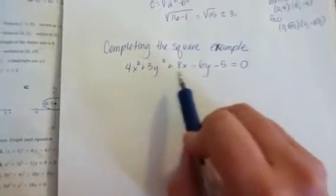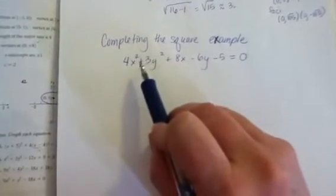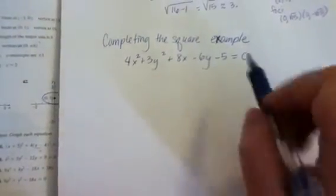Just like circles, we can complete the square with ellipses. Remember, when you're completing the square, you want to group your x's together, group the y's together.